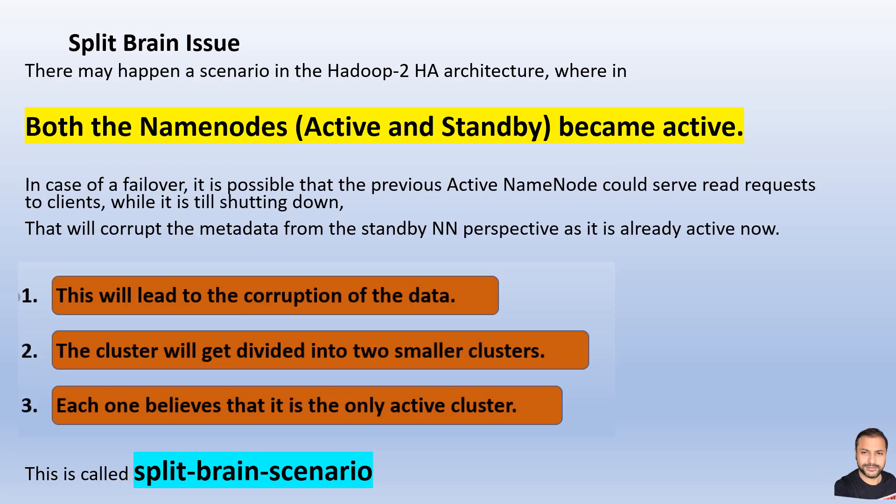The split brain problem is a scenario which may happen in Hadoop 2 architecture where both the name nodes — the active and the standby — become active at the same time. In the typical Hadoop 2 architecture, there is an active name node and a passive name node which acts as the backup and will take over in case of failovers. But sometimes it may happen that both nodes become active at the same time, and this entire scenario is called a split brain issue.